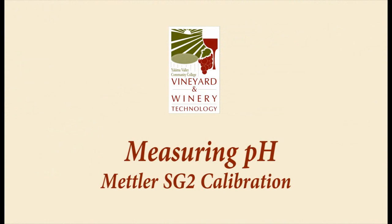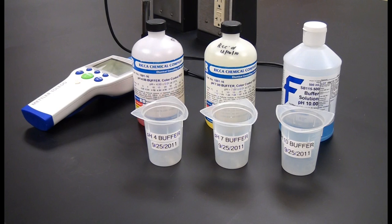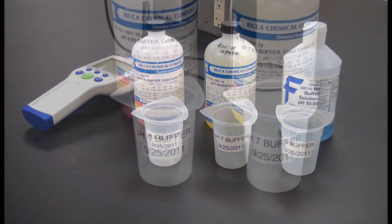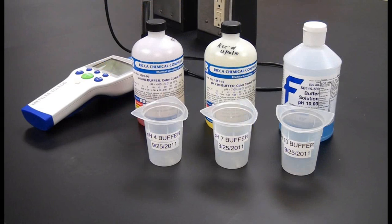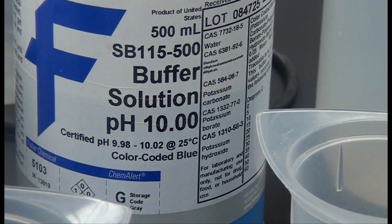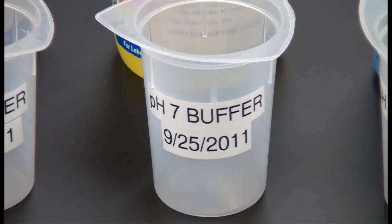To calibrate the meter, obtain 2 or 3 pH buffer standards. When performing a 2-buffer calibration, it should be buffer solutions of pH 4 and of pH 7. A 3-buffer calibration will also use a pH 10 buffer. Any solutions dispensed into another container should be clearly marked and dated for the date dispensed.